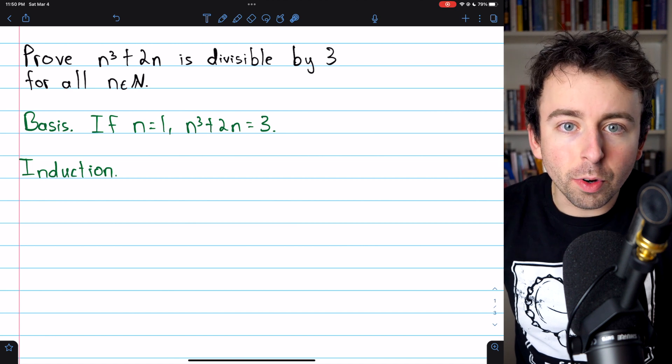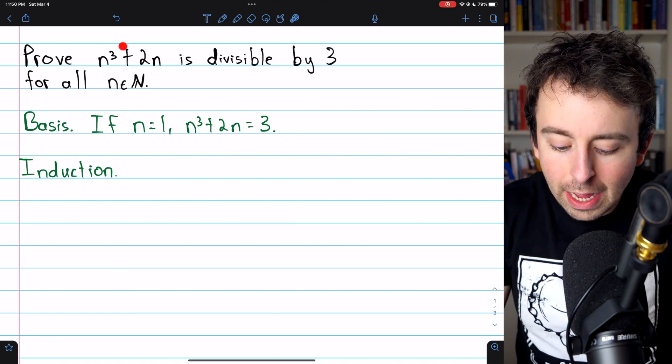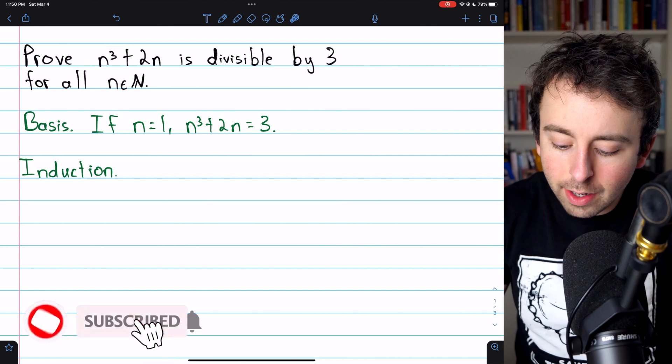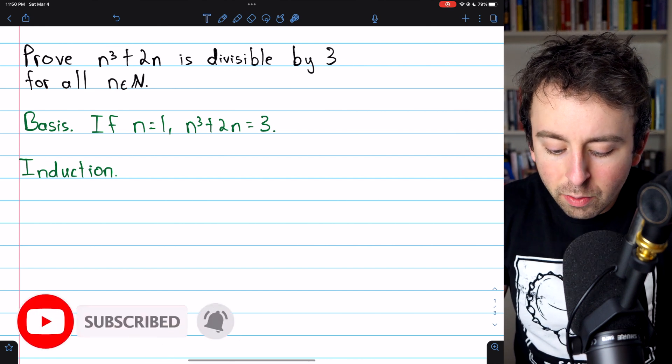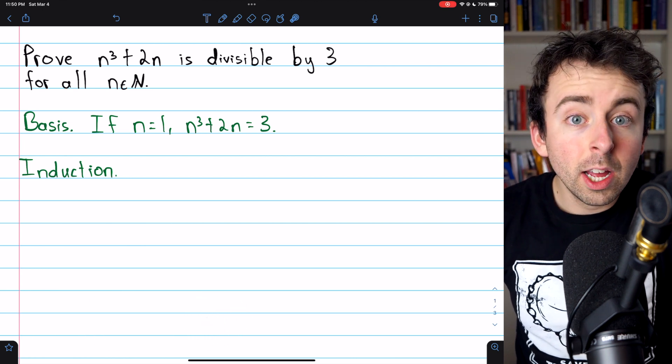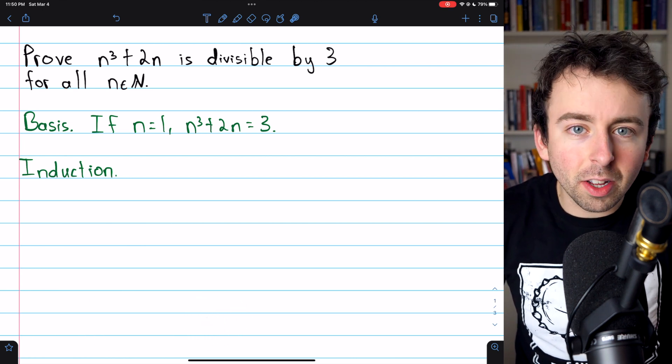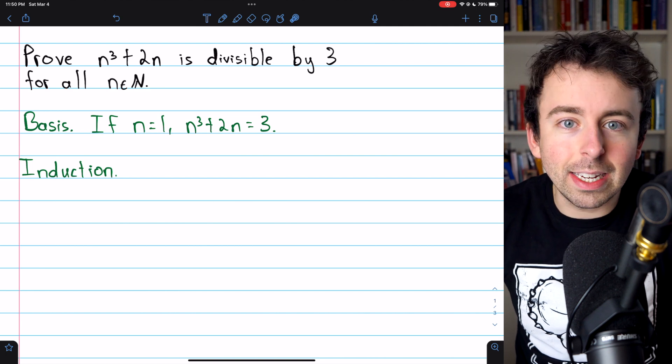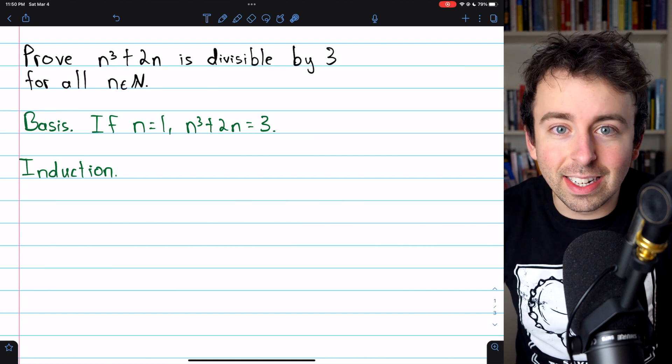Let's go through a basic induction proof. We're asked to prove that n cubed plus 2n is divisible by 3 for all natural numbers n. So we're just talking about positive integers. That's a type of result that would make us think we might need to use induction, and indeed we will.